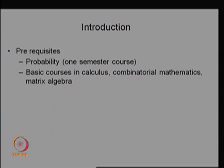Other than the probability course, we need a basic course in calculus and some mathematical background in combinatorial problems and matrix algebra. These topics would have been covered in Math 1 or Mathematics 2 courses, and that is enough to understand the stochastic process course. So the prerequisites are probability theory as well as Mathematics 1 and Mathematics 2.